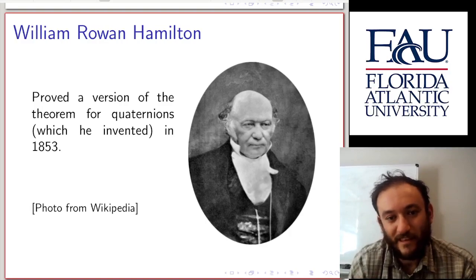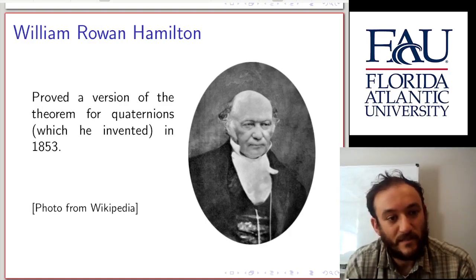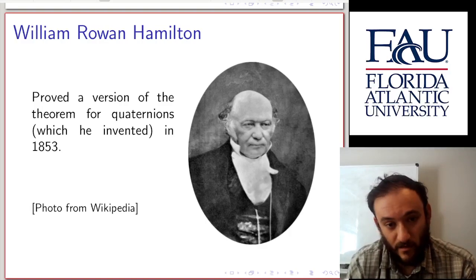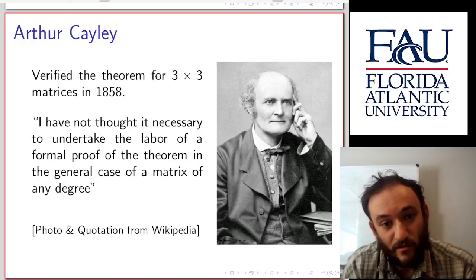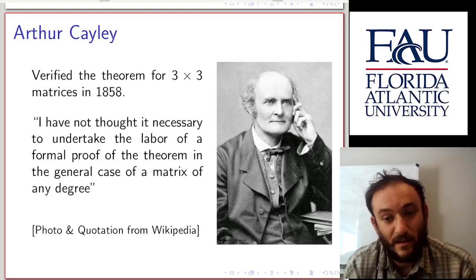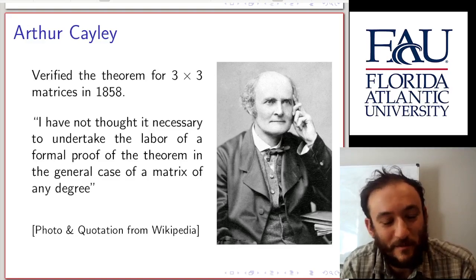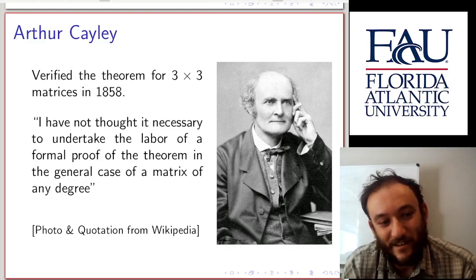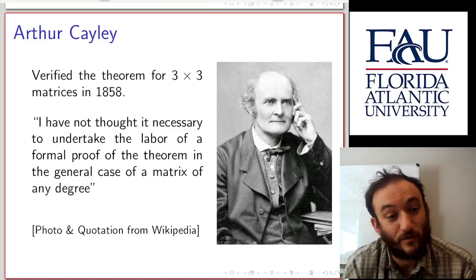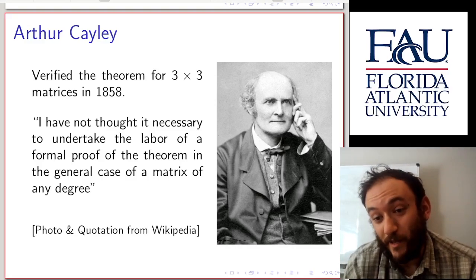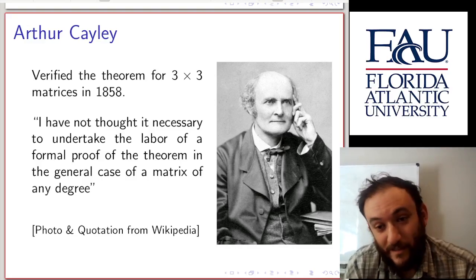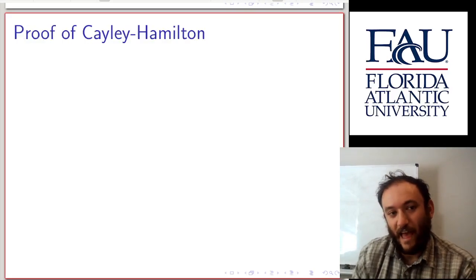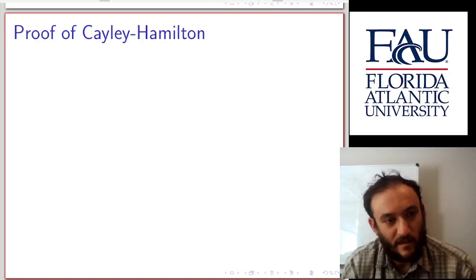Before we go on, here are the Cayley and Hamilton of the theorem. This is William Rowan Hamilton, famous for the quaternions, who proved a version of this theorem for quaternions in 1853. This is Arthur Cayley, and he verified the theorem for 3×3 matrices in 1858. There's a snarky quote, possibly from Wikipedia: 'I have not thought it necessary to undertake the labor of a formal proof of the theorem in the general case of a matrix of any degree.' For us it is quite useful — but for Cayley, 3×3 was enough. The actual theorem in its general form was proven by Frobenius later on.